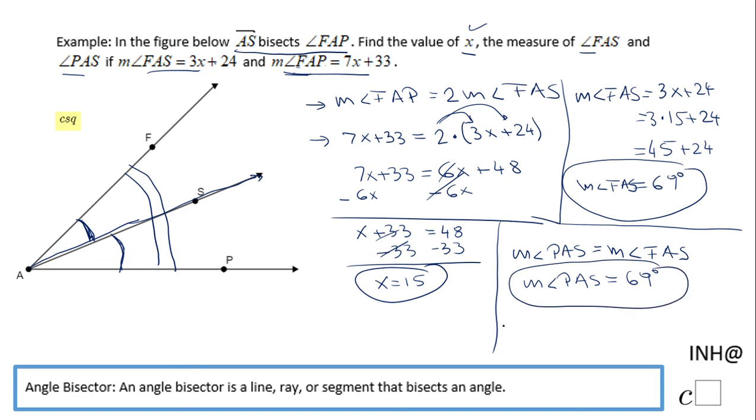If they ask you the measure of angle FAP, which they don't in this case, that would be twice 69, so 138 degrees. That's only if you need it. In this case, they ask us only these three things. If you enjoyed this video, don't forget to click the like button and come back to Csquared for more help. Thank you.